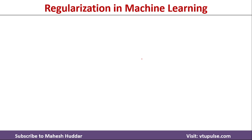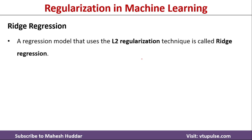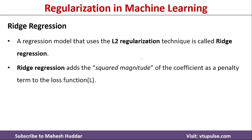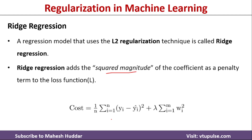Ridge regression uses L2 regularization. Unlike lasso, ridge regression adds the squared magnitude rather than the absolute magnitude as a penalty to the loss function. So to the original loss function, we add the squared magnitude of the coefficients.